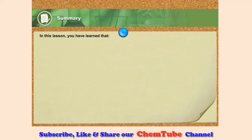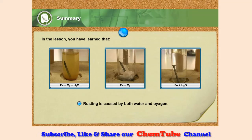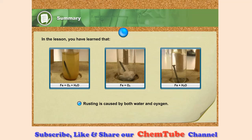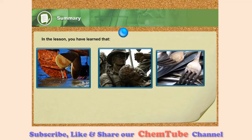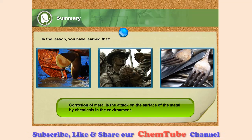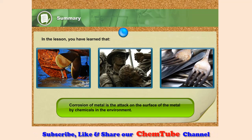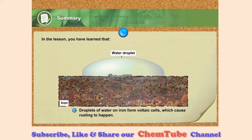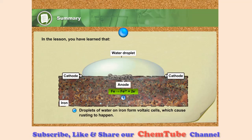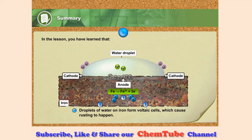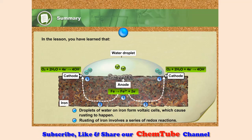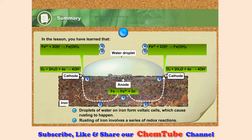In this lesson, you have learned that rusting is caused by both water and oxygen. Corrosion of metal is the attack on the surface of the metal by chemicals in the environment. Droplets of water on iron form voltage cells, which causes rusting to happen. Rusting of iron involves a series of redox reactions.